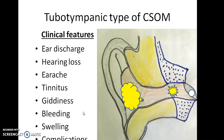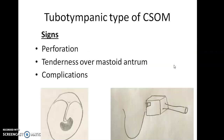The symptoms of CSOM include ear discharge, hearing loss, earache, tinnitus, giddiness, bleeding, swelling, and various other complications. The pus is seen draining out. On examination, perforation is visible in the tympanic membrane — it can be small to medium size. If you press upon the mastoid process, there will be pain (tenderness). Various complications can arise and signs will vary accordingly.